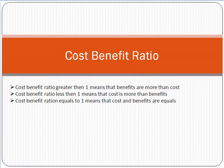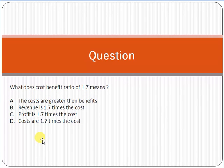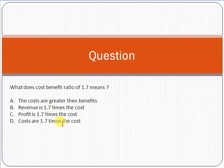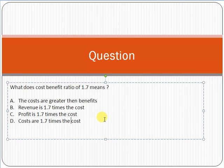Now let me ask you a question. What does a cost-benefit analysis ratio of 1.7 mean? There are four options: A — costs are greater than benefits; B — revenue is 1.7 times the cost; C — profit is 1.7 times the cost; D — costs are 1.7 times the profit. Which option would you choose?